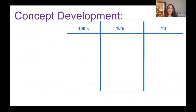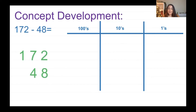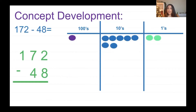Let's get started with our hundreds, tens, and ones chart. My first problem is 172 take away 48. Here are my numbers lined up nice and straight, so I'm ready to subtract. The first thing I do is make my number: I have 172, which is 1 hundred, 7 tens, 2 ones.